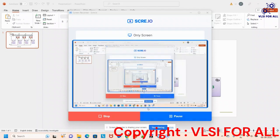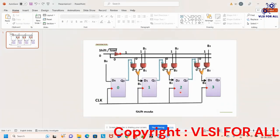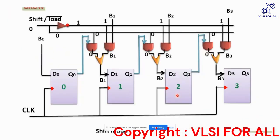Hello everyone, welcome to VLSI for All. Today we are going to discuss another video based on Verilog code. Today we are going to discuss about a shift register. Generally we have four main shift registers: parallel input parallel output, parallel input serial output, serial input serial output, and serial input serial output.